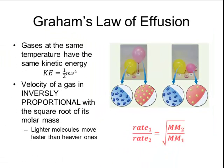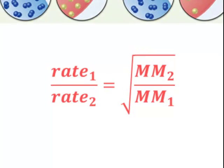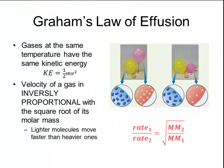The equation for Graham's Law uses proportions where the rate of gas 1 compared to the rate of gas 2 is inversely proportional to the square root of its mass. Because there's an inverse relationship, if the rate of gas 1 is on the top, the molar mass of gas 1 is on the bottom of the other side of the equation. I will also demonstrate some of these calculations in class.